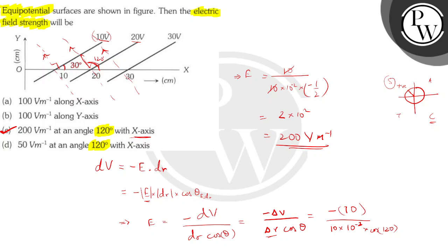So the final answer for this question is going to be option C. 200 volt per meter at an angle of 120 with the x-axis. I hope you understood the solution. Thank you very much.